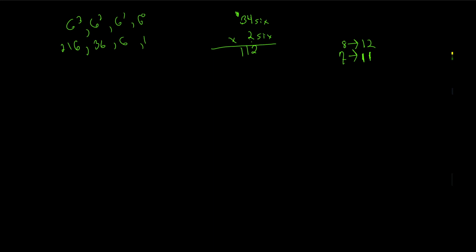Let's double check in base ten. Three-four in base six is four in the ones place and three in the sixes place, so three times six is eighteen plus four — twenty-two — times two equals forty-four. Our answer one-one-two in base six is two in the ones, one in the sixes, and one in the thirty-sixes: thirty-six plus six plus two equals forty-four. The positional system holds all the value we need, and carrying past the digit count handles the place values.